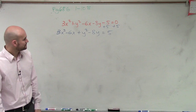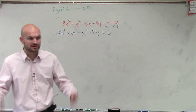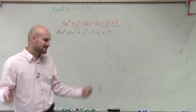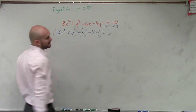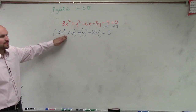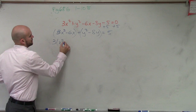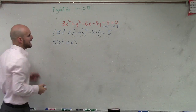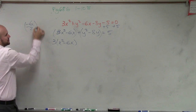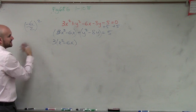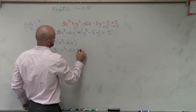Now the next step is I need to get a binomial squared. So the process for getting a binomial squared is completing the square. We're going to do it twice — for these two x terms and for these two y terms. We look at the x terms and say I can't complete the square until I factor out the 3. Now I can complete the square: take my b, which is negative 6, divided by 2, and square it. Negative 6 divided by 2 is negative 3; negative 3 squared is 9. So I have 3 times x squared minus 6x plus 9.